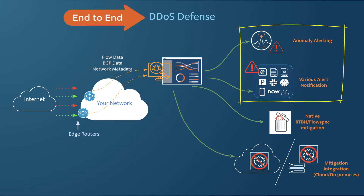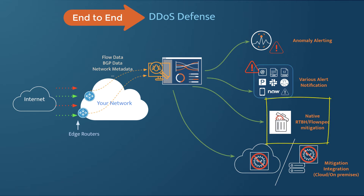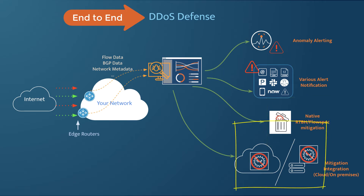First, accurate and flexible anomaly and DDoS detection and notification. Second, powerful ad hoc forensics analytics on months to years of granular network traffic details. Third, native RTBH or flowspec mitigation support. Fourth, integrated automation with leading mitigation providers like Radware and A10, as well as JSON API integration.